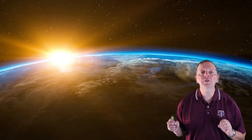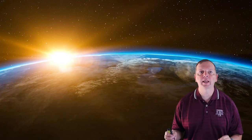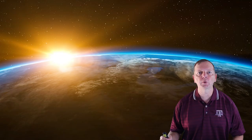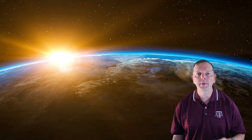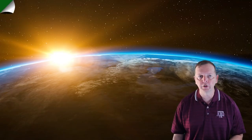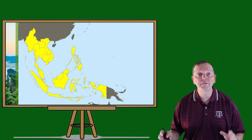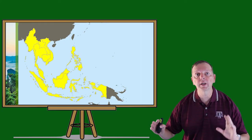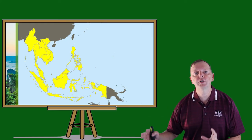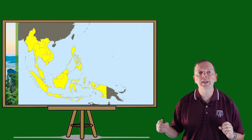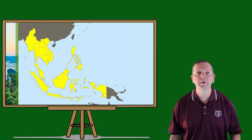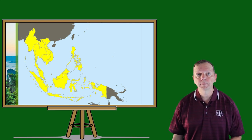Hey guys, Mr. Ruchoff. This is our first lesson in our Southeast Asia unit, and as we do in all of our different units, we start this unit by looking at the physical geography and how the physical geography impacts the people in the region. Southeast Asia as a region is located just to the south of China and to the east, across from the Bay of Bengal from India.